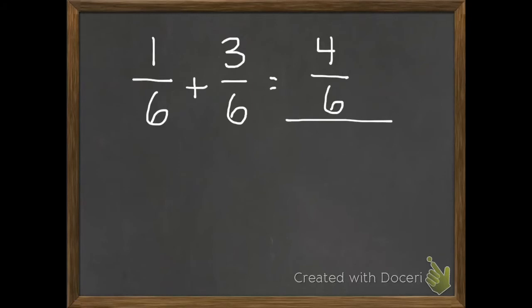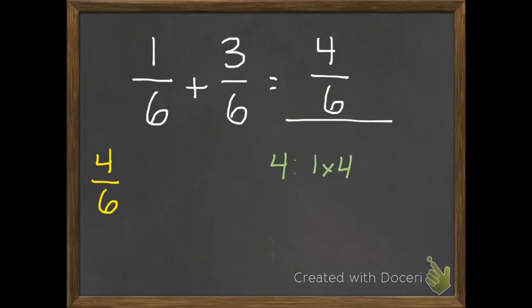Once we have our answer, we have to see if it's in simplest form. I'm going to write 4 sixths over here on the side. One strategy to find out how to put fractions in simplest form is to find the greatest common factor. So I'm going to find my factors just of my numerator — the 4. My factors of 4 are 1 times 4, and 2 times 2. I'm going to try the greatest number, the 4, to see if I can divide both my numerator and denominator by it. Since these are the factors of 4, I know all of these work with the numerator. The denominator is 6. My multiples of 4 are 4 and 8, so no 12. That doesn't work.